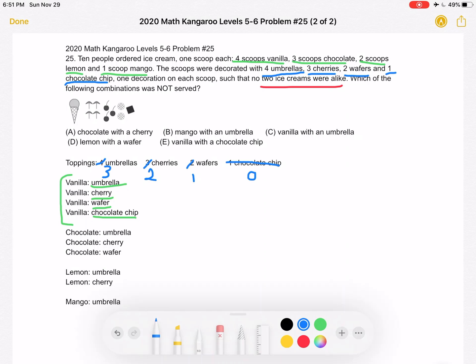Now let's look at chocolate. We have three scoops of chocolate, and again no two can be alike, so we need three different toppings. We have an umbrella, cherry, and wafer. Just keep in mind there's no more chocolate chips left to use.